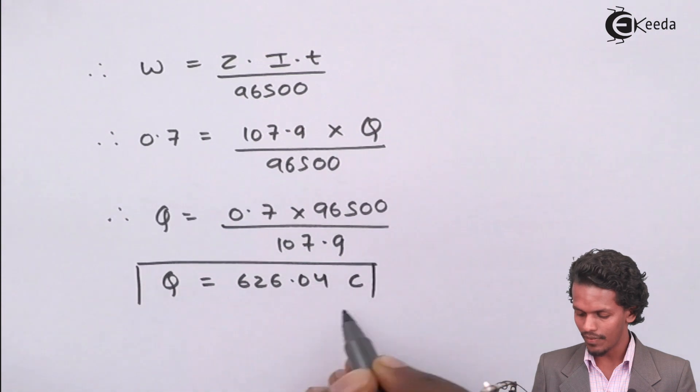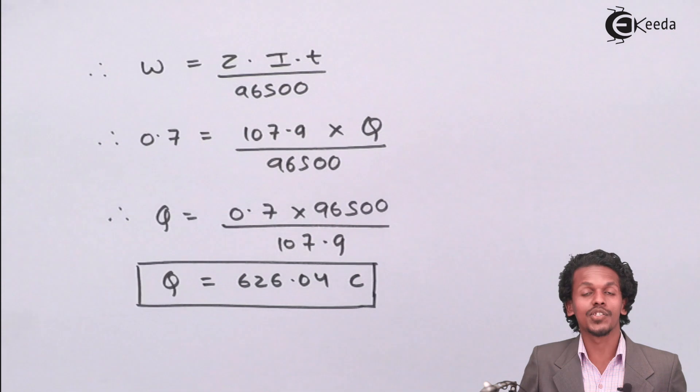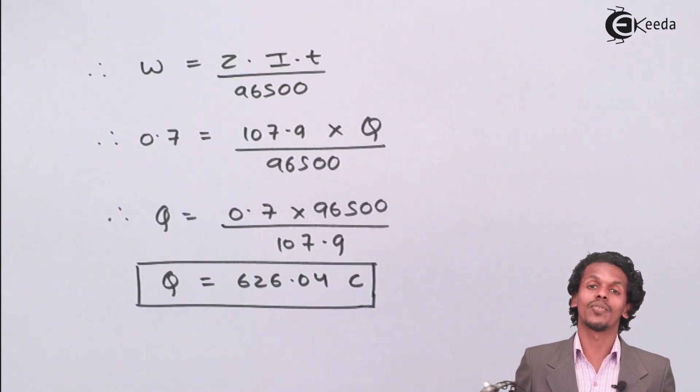So this is what we have got: the answer is 626.04 coulombs of charge.